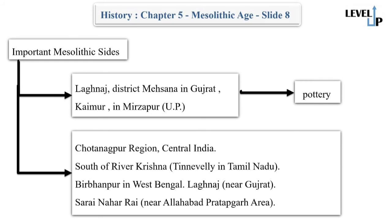Other prominent Mesolithic Age sites include the Chota Nagpur region in central India, south of the river Krishna, Pirvanpur in West Bengal, Langanaj near Gujarat, and Sarai Nahar Rai near Allahabad in the Pratapgarh area.